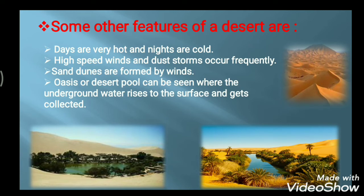Some important features of deserts: first, days are very hot and nights are cold — during the daytime it is very hot because of the sand, and during the nighttime the sand becomes cold and the area also becomes colder. Next, high-speed winds and dust storms occur frequently. When high-speed winds blow over the sand, they cause dust storms. Sand dunes are formed by winds and shift from one place to another.